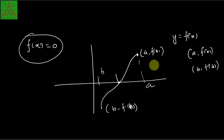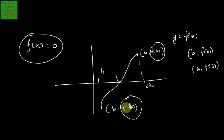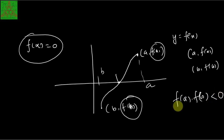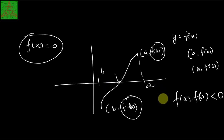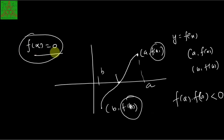How do we achieve this? If f(a) and f(b) are of opposite sign — that is, f(a) × f(b) is negative — then there is always a root lying in the interval [a, b]. This is the Intermediate Value Theorem, and we will use this concept to obtain the root of any equation f(x) = 0 via the graphical method.